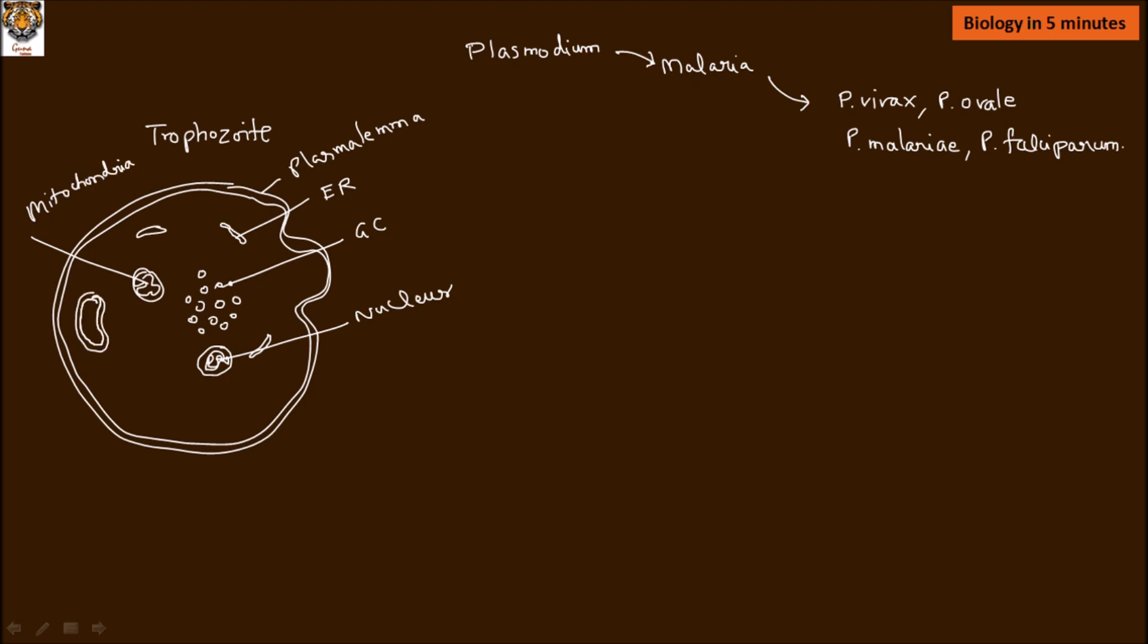In addition to this, it does contain some food vacuoles. These trophozoite forms exist in the RBCs; they feed on the hemoglobin and contain hemozoic granules, which are the food materials or raw materials for their survival.